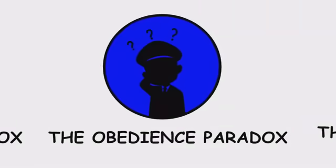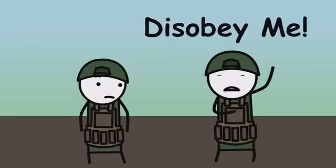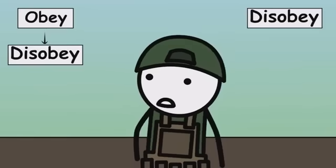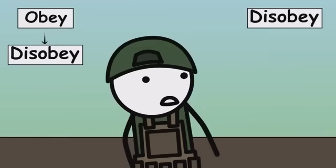The obedience paradox. A perfectly obedient person is told to disobey. If they obey, they disobey. If they disobey, they obey.